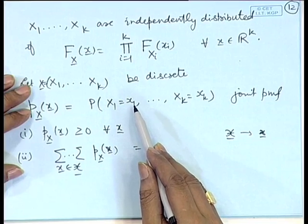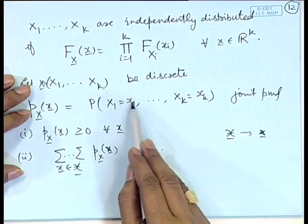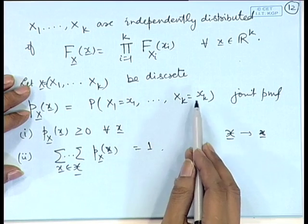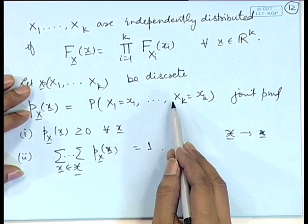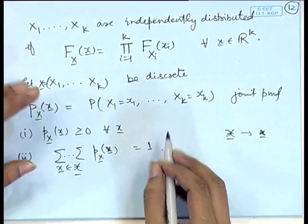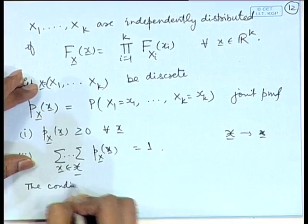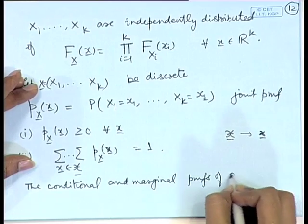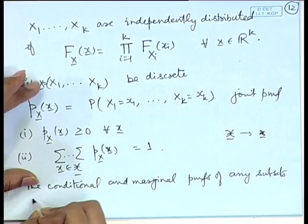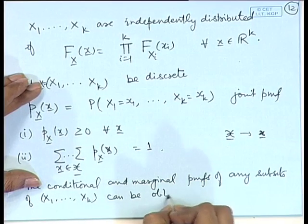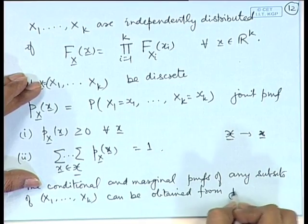For example, if we want the marginal distribution of X_1, we sum the joint PMF over X_2, X_3, ..., X_k. If we want the marginal PMF of X_{k-1} and X_k, we sum over X_1, X_2, ..., X_{k-2}. Likewise, we can define the conditional probability mass functions of any subset of X_1, ..., X_n given any other subset. The conditional and marginal PMFs of any subsets can be obtained from the joint PMF.